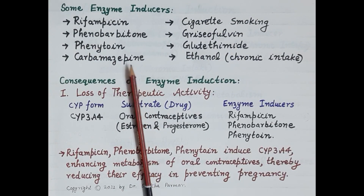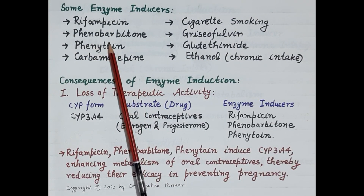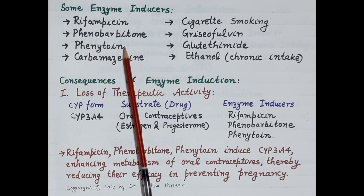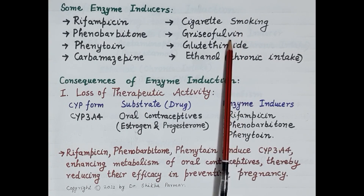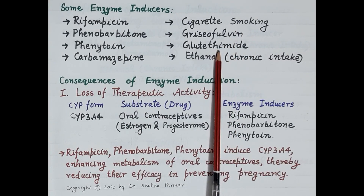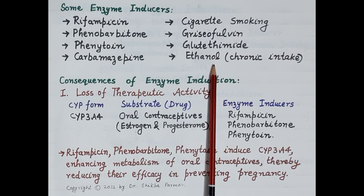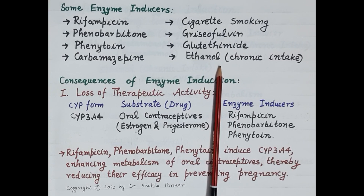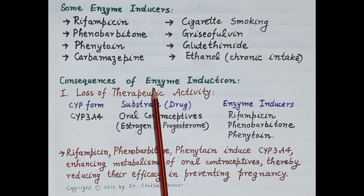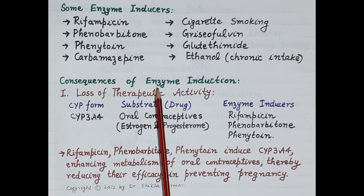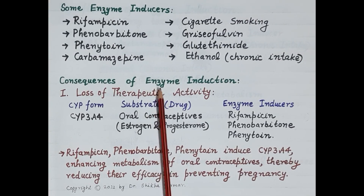Some very well-known examples of enzyme inducers are rifampicin, phenobarbitone, phenytoin, carbamazepine, cigarette smoking, griseofulvin, glutethimide, and chronic intake of alcohol, that is ethanol. Now let's study the consequences of enzyme induction.